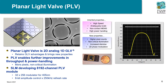The planar light valve, or PLV, is a new technology that utilizes piston motion, much like the GLV. A center surface is deflected while the surrounding remains static, diffracting light into a circular first order. The PLV retains the high-speed grayscale advantages of the GLV. However, the two-dimensional surfaces allow for larger apertures for higher throughput and power handling, as well as simple spherical optical designs.